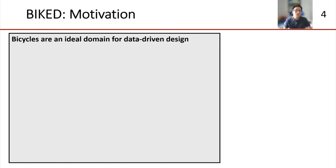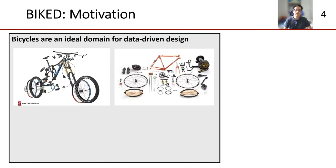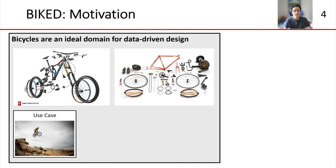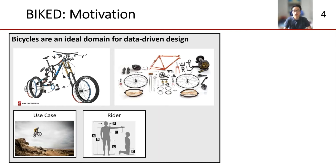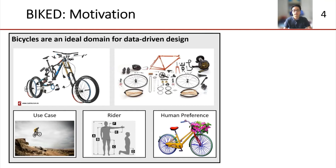Why bicycles exactly? Well, bicycles are machines with hierarchies of subcomponents and complex part dependencies. Bikes also have large variations between designs. This variation largely stems from the broad set of use cases, ranging from road races to stunts to cargo transportation, as well as physical considerations of the rider — body dimensions, flexibility, posture — and even human preferences like style, aesthetics, and budget.